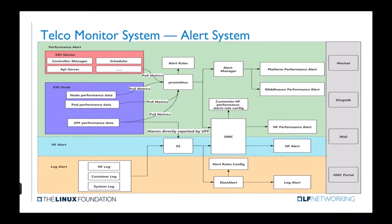This is the alert system. It includes performance alerts, log alerts, and network function alerts. For performance alerts, Alert Manager completes the notification of performance data and sends alerts to the corresponding receiving backend. For log alerts, Elastic Alert completes the log alert notification and sends alerts to the relevant receiving backend according to the webhook configured by the user. For alerts reported by the network function, the network function can directly report alarms, and the alarm data is stored in Elasticsearch. UMC is responsible for retrieving alarm information from Elasticsearch and visualizing it.